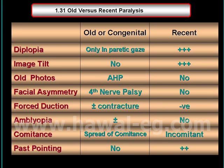This table contains the differentiation between old or congenital and recent paralysis. In old paralysis, diplopia occurs only in paretic gaze, while in recent paralysis, diplopia is a very prominent complaint.